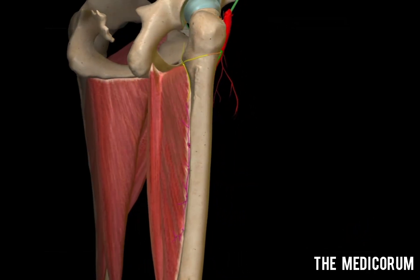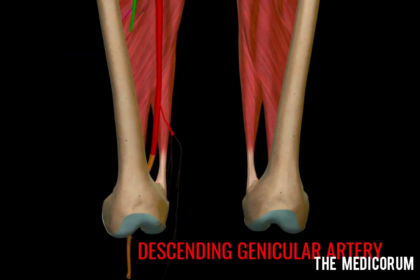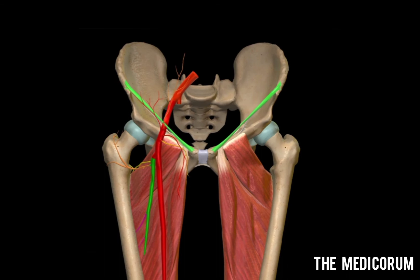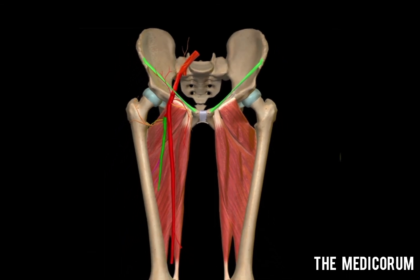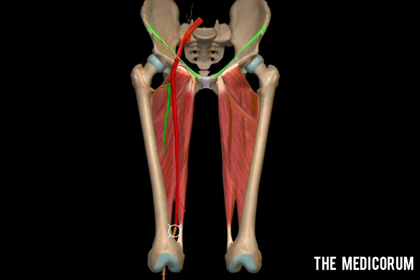At the end, the femoral artery gives the descending genicular artery, and then the femoral artery continues as the popliteal artery in the leg.